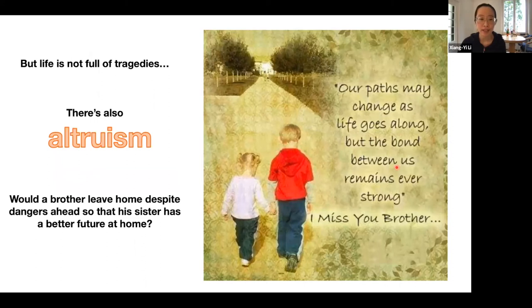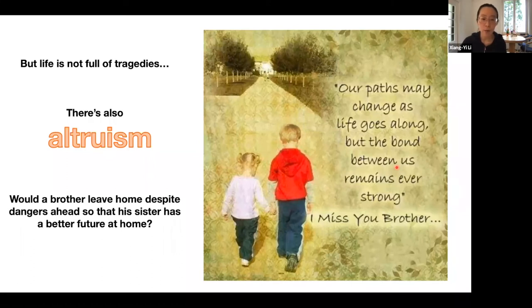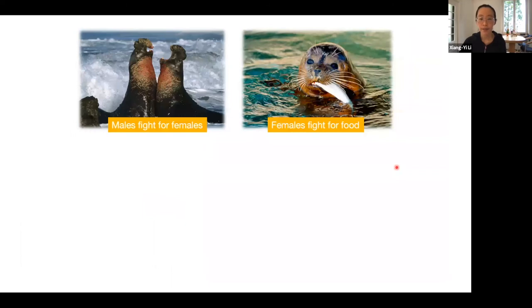Life is not full of tragedies — there is also altruism. Our second example is about the evolution of altruistic behaviors between males and females, specifically whether male animals can evolve to leave home and disperse early — despite high mortality — so that sisters in the natal habitat have better fitness later on. In previous models, the common assumption is that males fight for females and females fight for food. But people very often ignore the fact that males need food too.